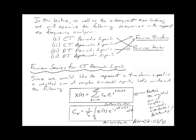Let's do periodic first. For continuous-time periodic signals, let's use the definition. We can represent a continuous-time periodic signal x(t) as an infinite summation of c(k) — which can be complex — multiplied by e^(j2πkf₀t). You might say, I don't see any sinusoids there.